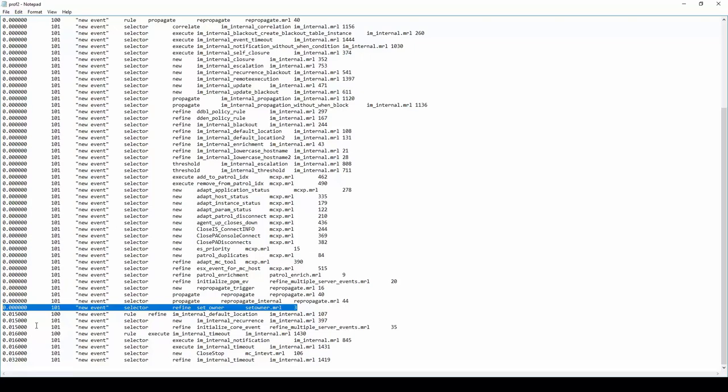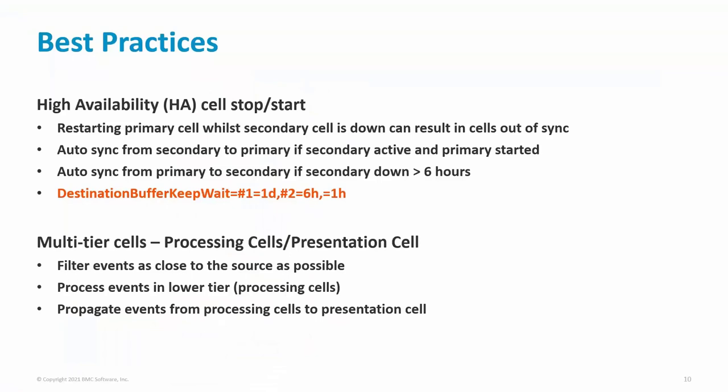This concludes the demo. With a HA cell, if the primary cell is restarted while the secondary is still down, this can result in the cells becoming out of sync, as messages from primary to secondary are only stored in a memory buffer and not persisted like regular propagation buffers. Be mindful of this if HA cells need to be restarted.